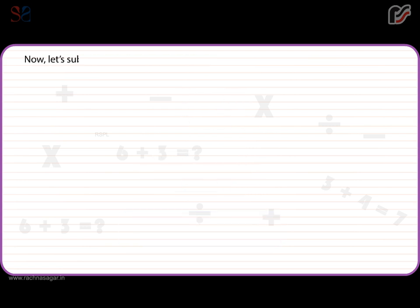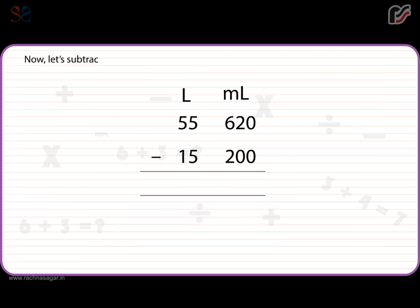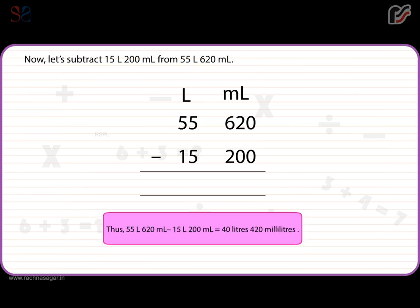Now, let's subtract 15 litres 200 millilitres from 55 litres 620 millilitres. Thus, 55 litres 620 millilitres minus 15 litres 200 millilitres is equal to 40 litres 420 millilitres.